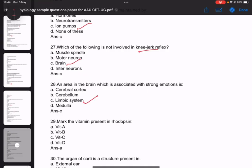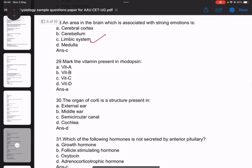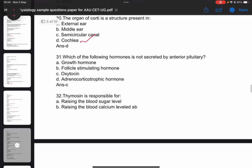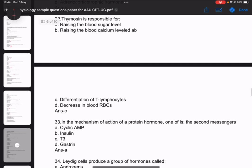Question twenty-nine: Mark the vitamin present in rhodopsin - answer is vitamin A. Question thirty: The organ of Corti is a structure present in cochlea. Question thirty-one: Which of the following hormone is not secreted by anterior pituitary - answer is oxytocin.